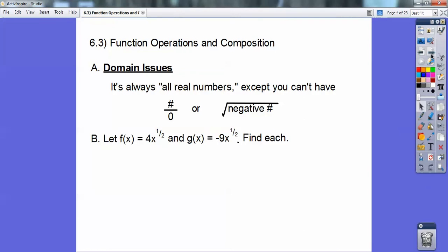So here we go. Let f of x equal 4x to the 1 half power. Notice only the x is to the 1 half power. And g of x equals negative 9x to the 1 half power. And similarly, only x is to the 1 half power.